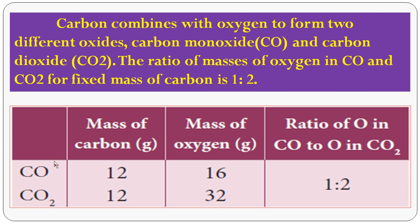Now let us move to the tabulation. For carbon monoxide CO, the atomic mass of carbon is 12 and the atomic mass of oxygen is 16. In carbon dioxide, the mass of carbon is 12 and there are 2 oxygen atoms, so 2 into 16 equals 32. The element A, carbon, has a mass of 12. The element B, oxygen, gives a ratio of 16 is to 32, so the ratio of oxygen in carbon monoxide to oxygen in carbon dioxide is 1 is to 2. In this way you have to explain the Law of Multiple Proportions.